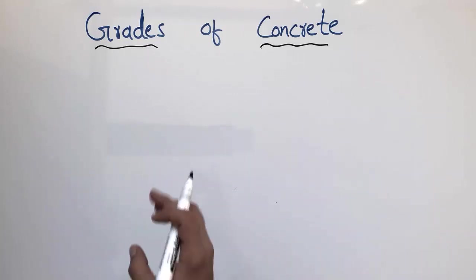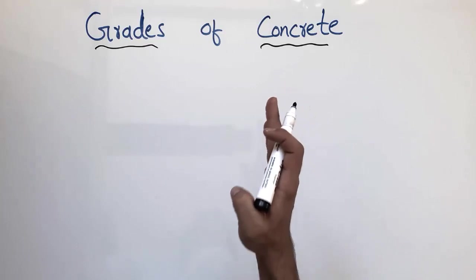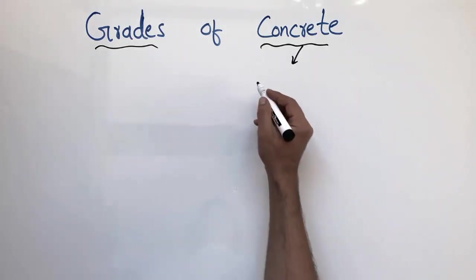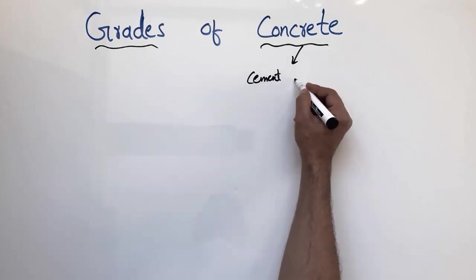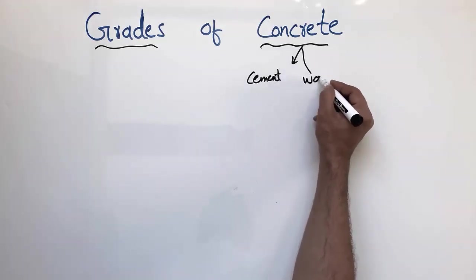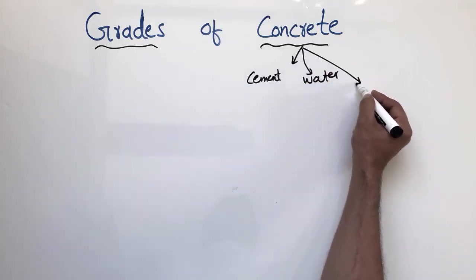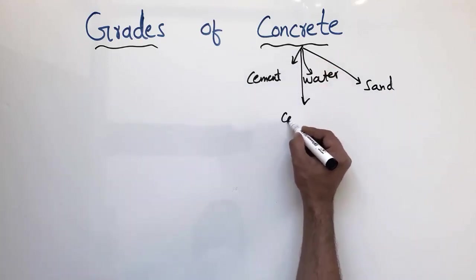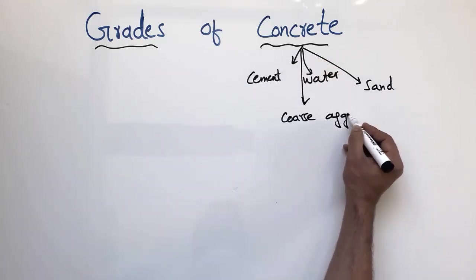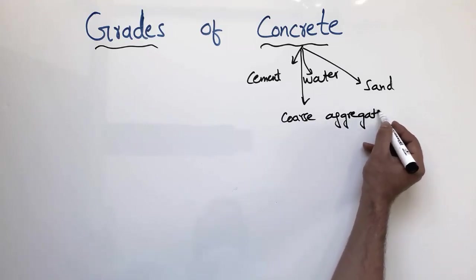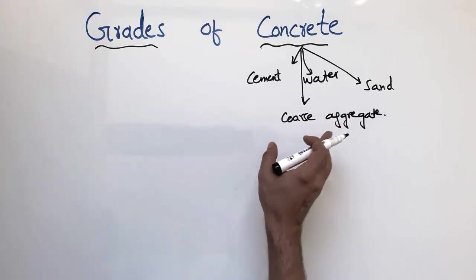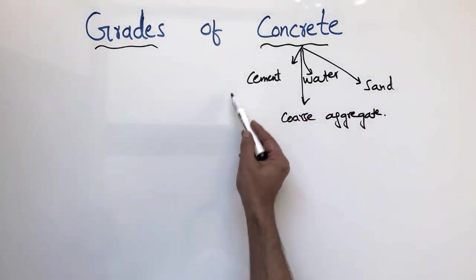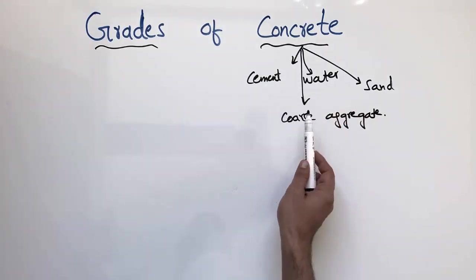The grade of concrete basically means the strength of concrete. The concrete strength depends on four main constituents: the cement, the water, the fine aggregate (or sand), and the coarse aggregate. By changing the content of these four constituents, we can achieve different strengths of concrete, or different grades of concrete.